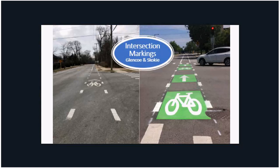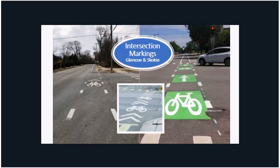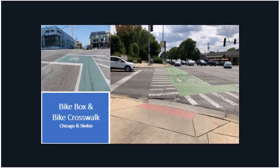Intersections are often the most dangerous parts of the road where crashes most often happen, so visible markings that alert drivers to bicyclists are important. The left example is from Glencoe and the right example is from Skokie, which uses green paint to make the markings stand out even more. There are many different styles and designs, including bike boxes to make bicyclists visible when stopped at an intersection. This example on the right is a bicycle crosswalk from Skokie, right alongside the pedestrian crosswalk.